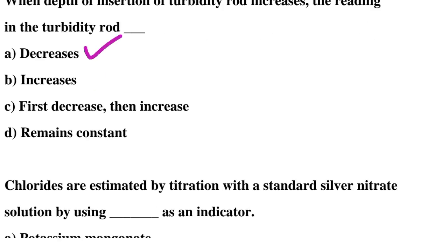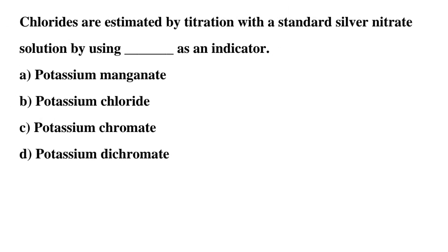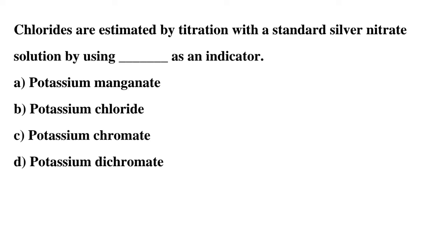Next question: chlorides are estimated by titration with standard silver nitrate solution by using — as indicator. Option A: potassium permanganate, option B: potassium chloride, option C: potassium chromate, option D: potassium dichromate. The correct answer is option C: potassium chromate.